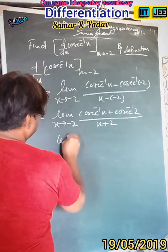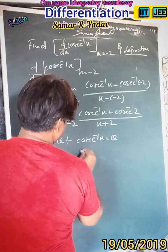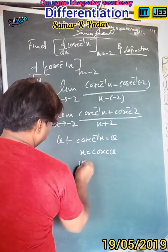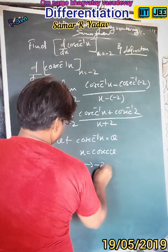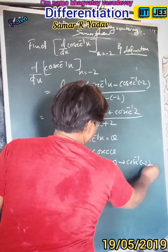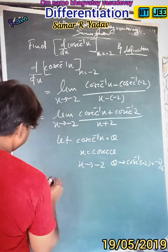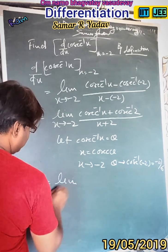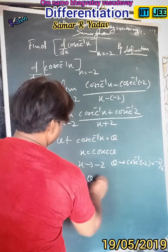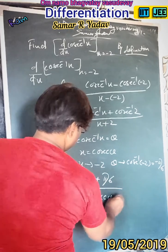Let cos⁻¹(x) = θ, therefore x = cos(θ). When x tends to -2, then θ tends to cos⁻¹(-2), which is equal to -5π/6. So keeping this value we get: limit as θ tends to -5π/6 of [θ + 5π/6] upon [cos(θ) + 2].